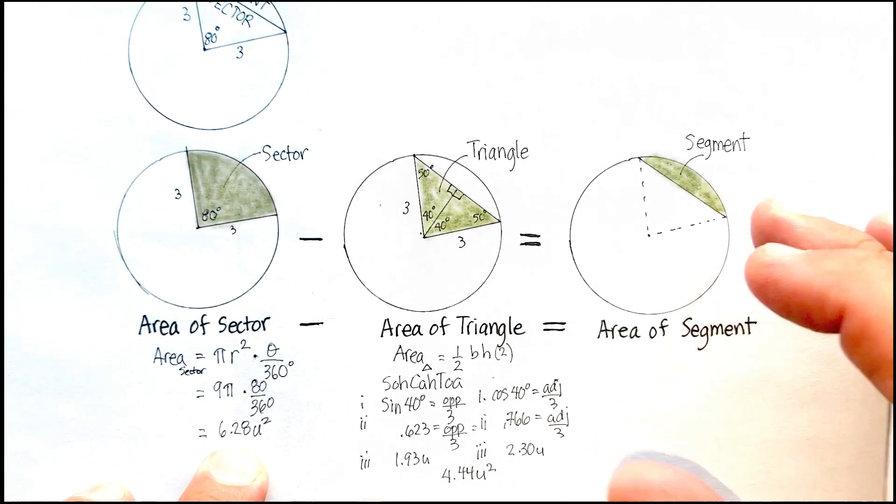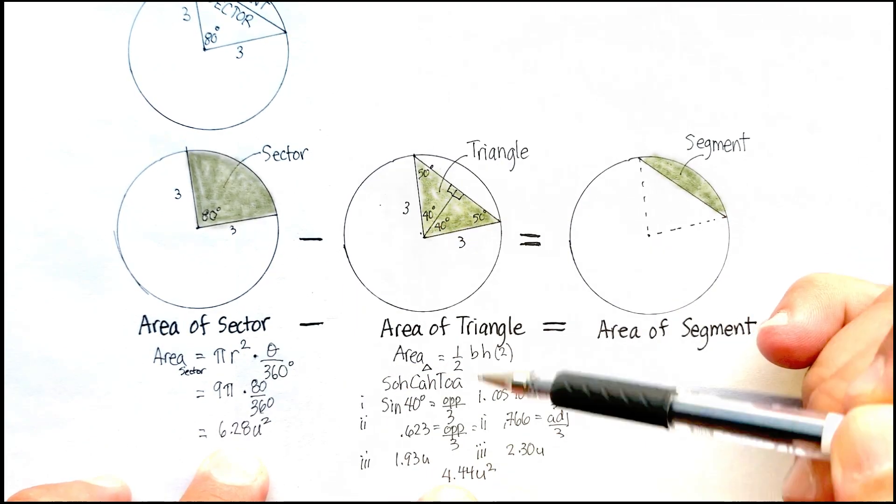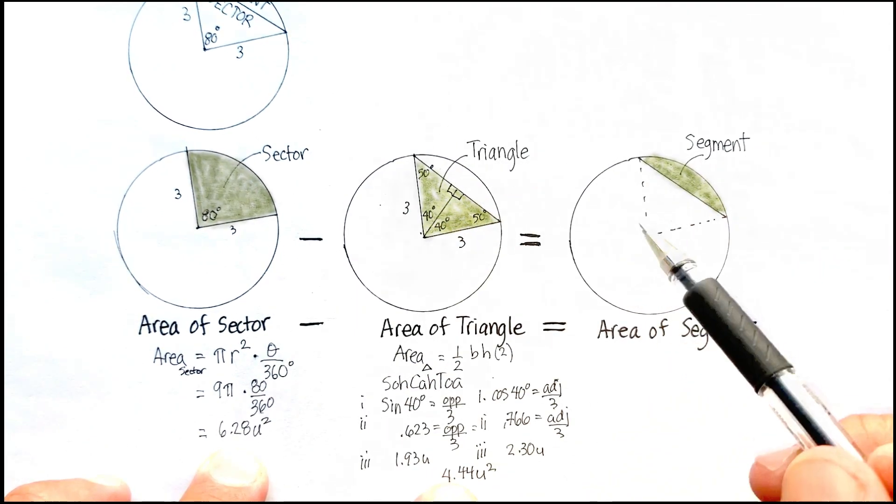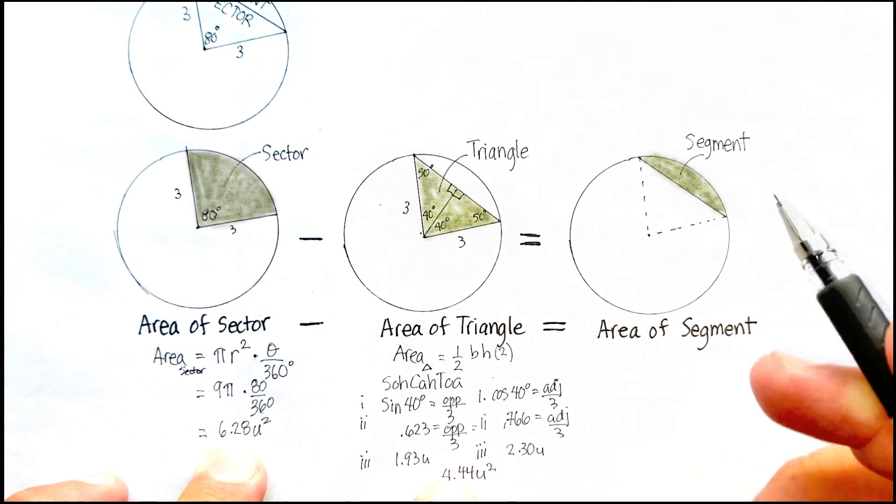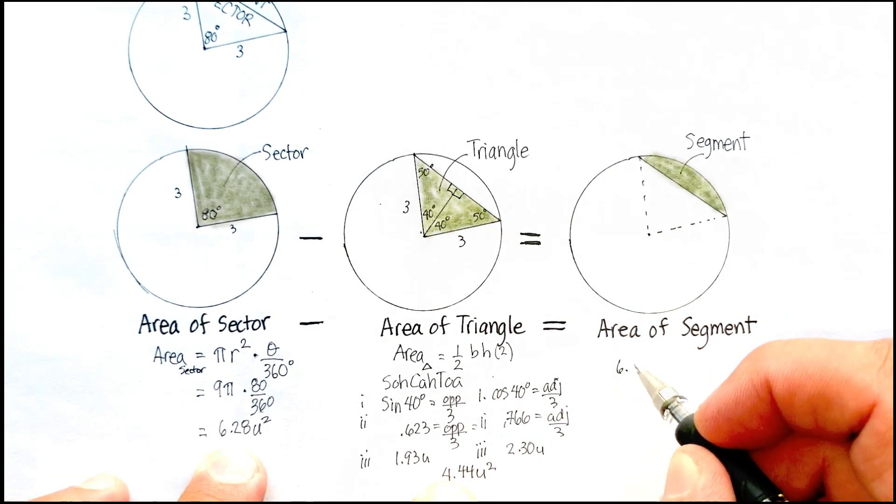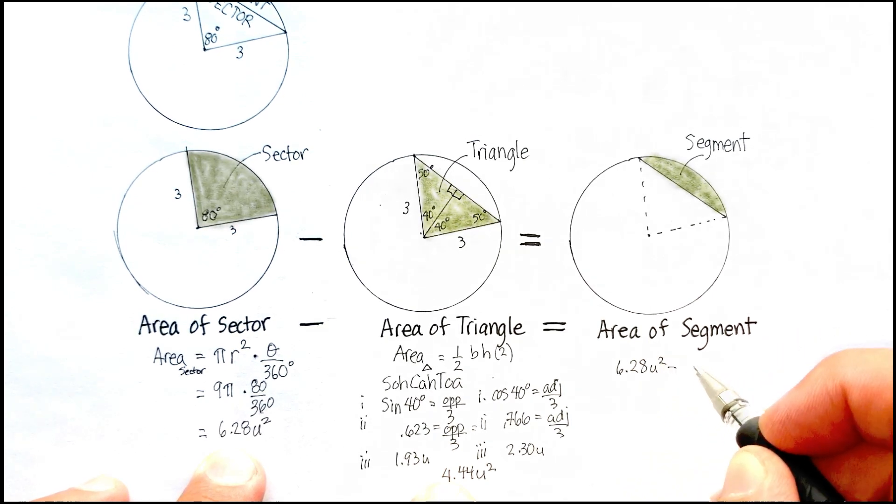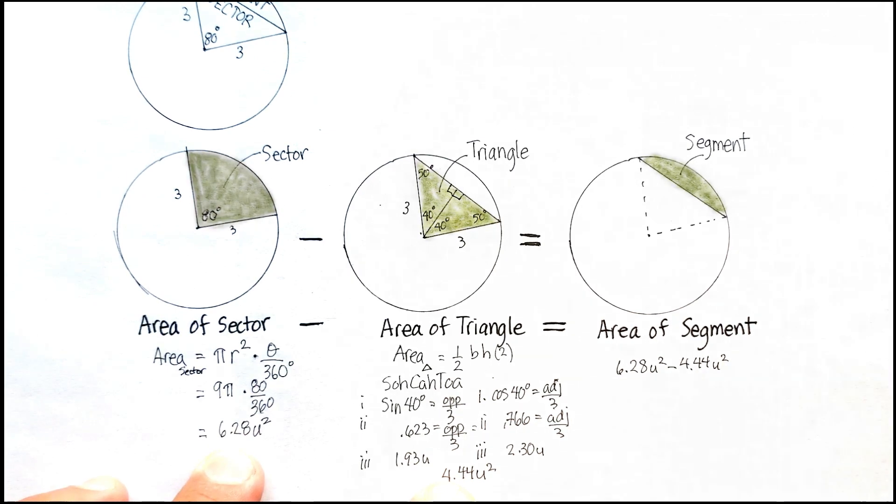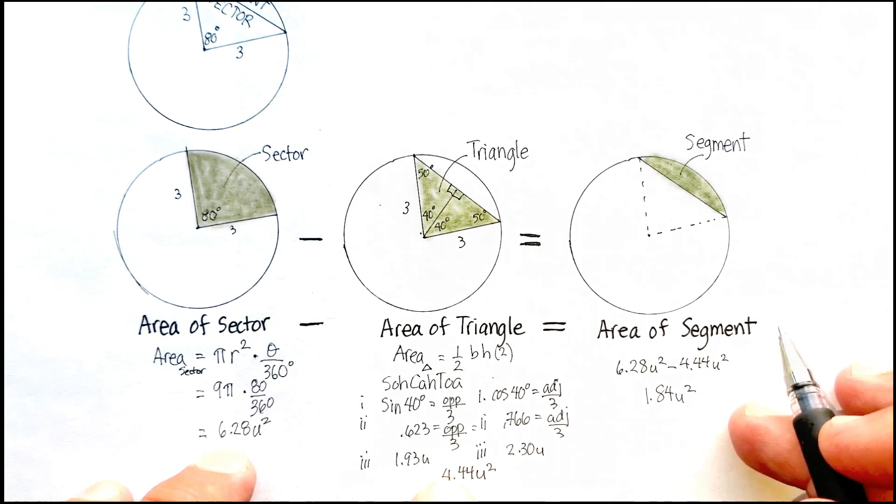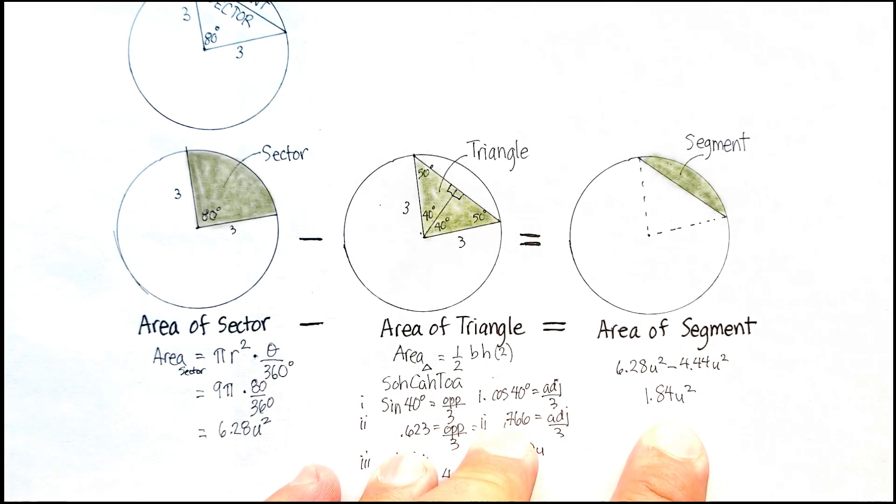Now, I'm just going to take the area of my sector, subtract the area of my triangle, and what I'll have left over is the area of the segment. So, 6.28 units squared minus 4.44 units squared, and that's going to give me 1.84 units squared, and there's the area of my segment.